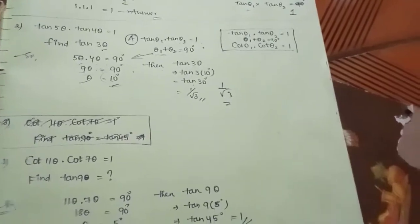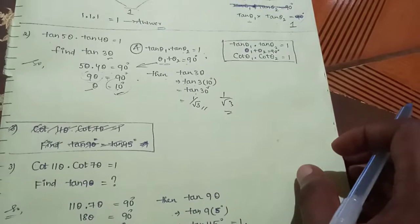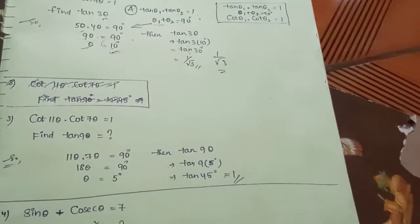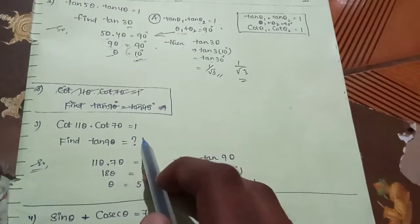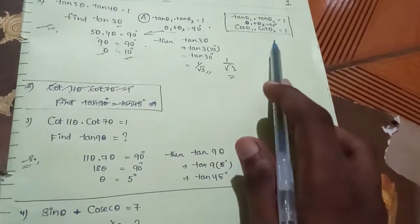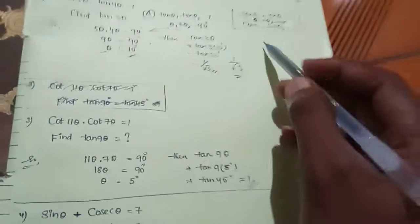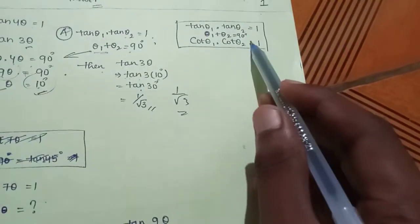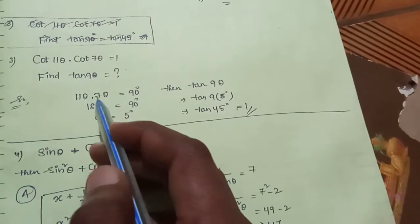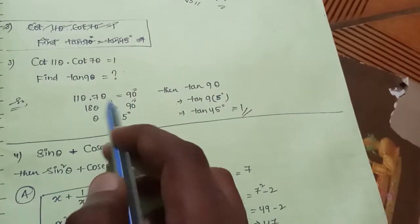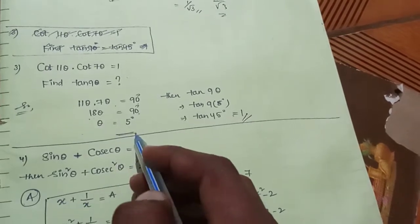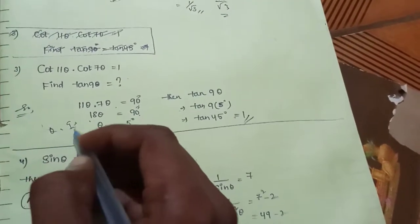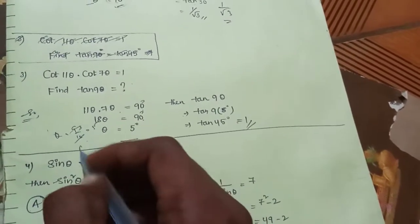Sorry friends, there is noise in the background — I hope it is clear. Next: Cot 11θ × Cot 7θ = 1. Using the same rule, θ1 + θ2 = 90 degrees: 11θ + 7θ = 18θ = 90 degrees, so θ = 90/18 = 5 degrees.